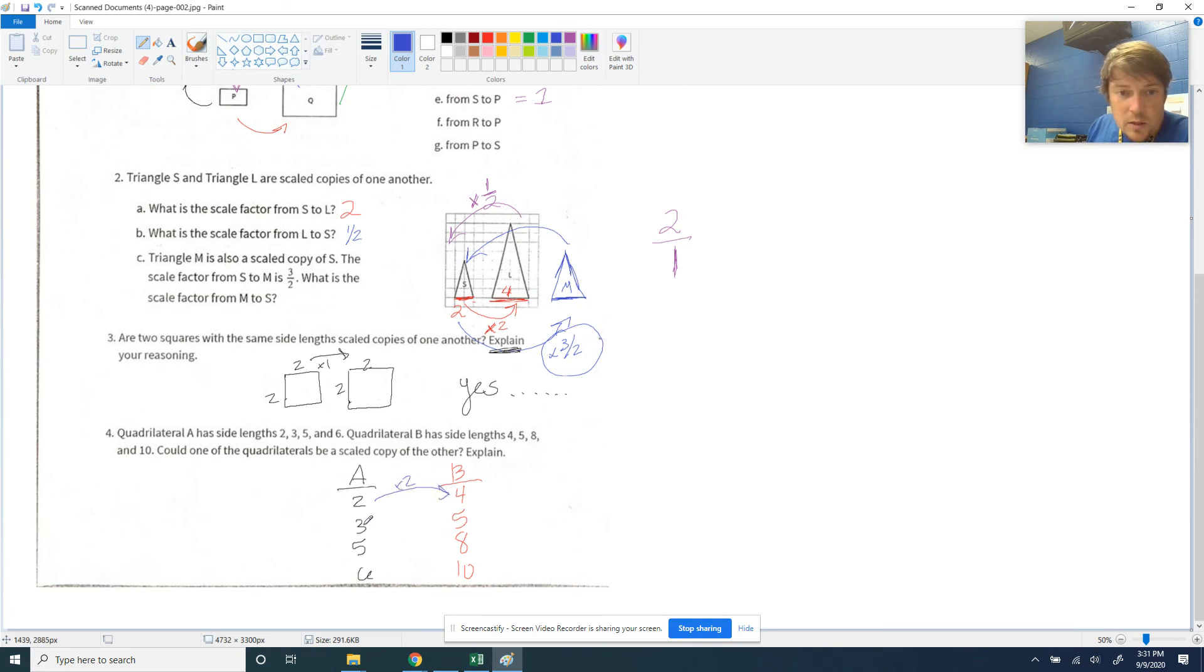Well, is 3 times 2 equal to 5? No, they're not. It's not going to be the same because every side has to get doubled. And it only worked for the first one. All the other ones are going to be something weird or different. So they're not scale copies. So you need to say something like, no, not all of the sides have the same scale factor multiplied to get the ones in quadrilateral B, something along those lines.